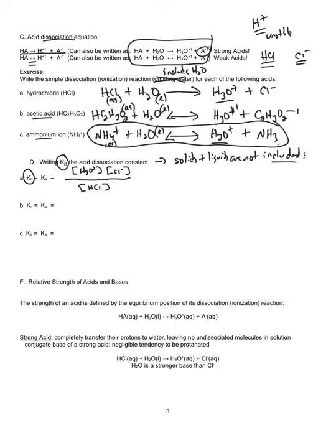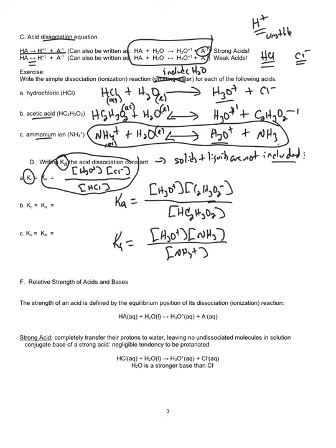Anything labeled aqueous goes into Ka expressions. Whenever we write a Ka expression, it will typically show the two ions on top over the weak acid on the bottom. For the practice Ka expressions: hydronium and acetate ion are on top; the acid (aqueous) is on the bottom; water is not included. For the ammonia reaction: ammonia is aqueous and included, water is not. Always be aware of states of matter — if it's a solid or liquid, it is not part of the K expression.